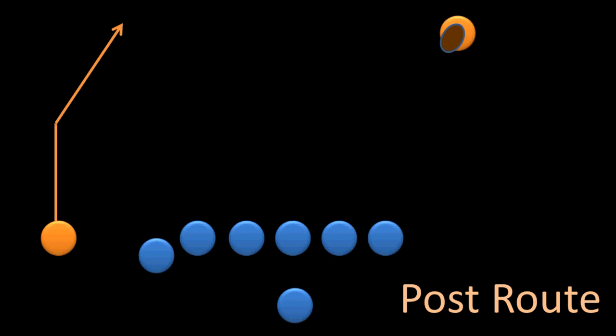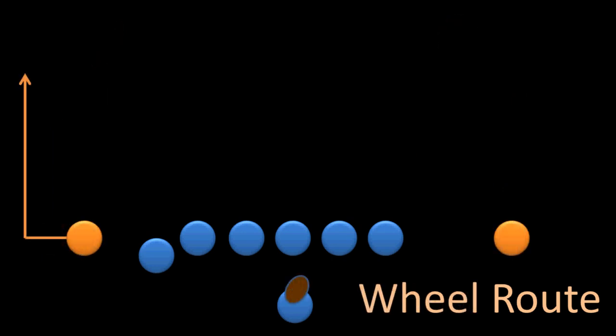The wheel route is the backwards version of the out route, because here the receiver will run first toward the sidelines and then turn and run up the field.